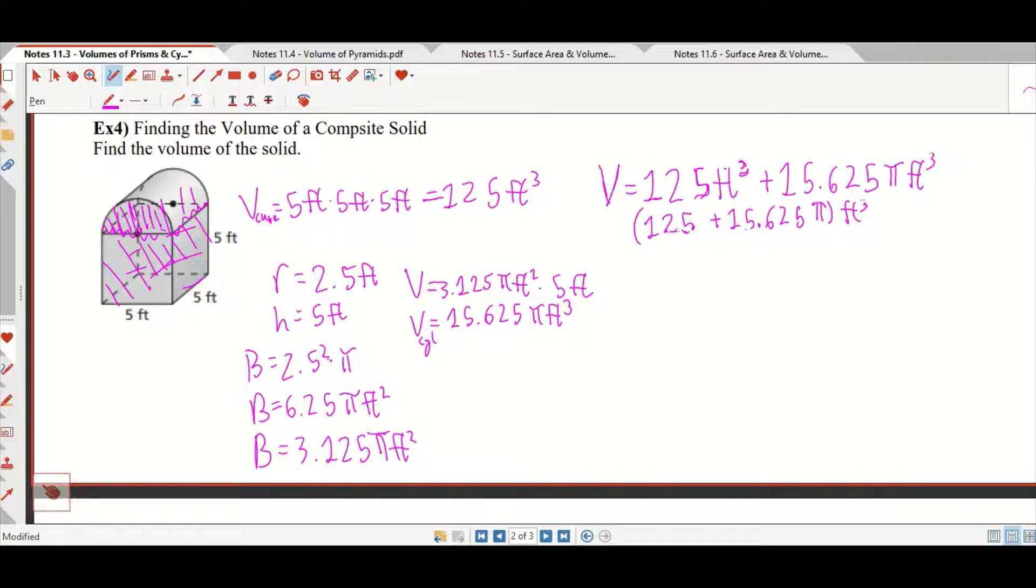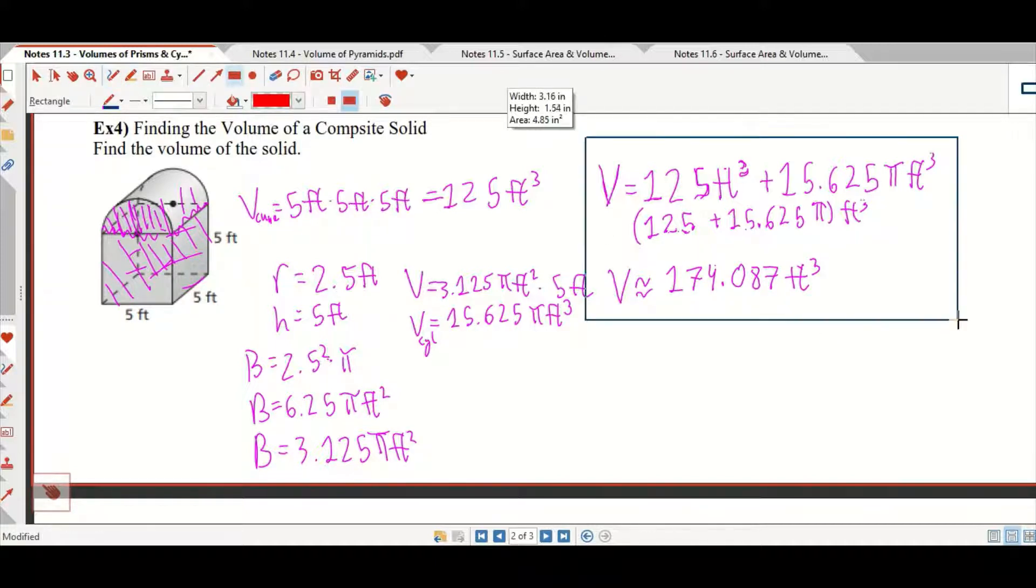Which, yeah, that seems like a really obnoxious way to talk about volume. So we're going to go ahead and do 15.625 pi. We're going to get an approximation for that and add that to 125, which means that your volume is approximately 174.087 feet cubed, and that's where I would put my answer: the volume of each piece individually added together.